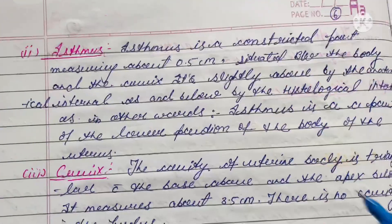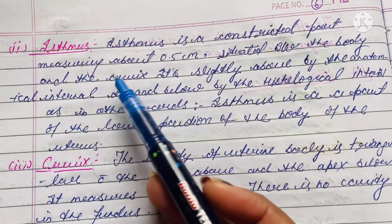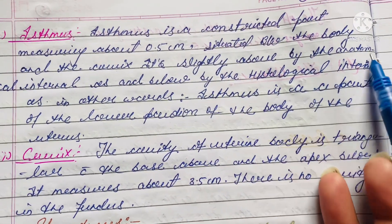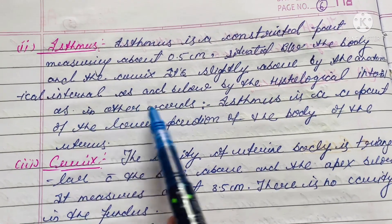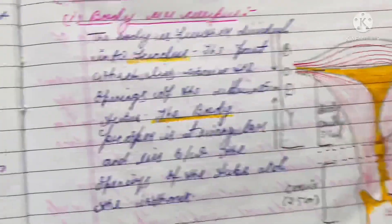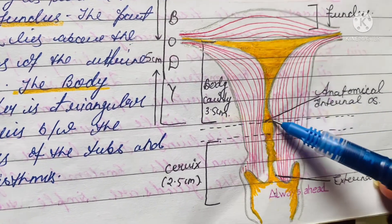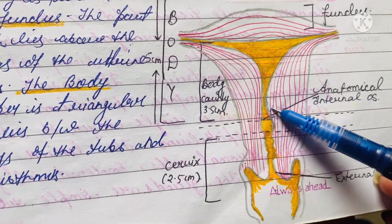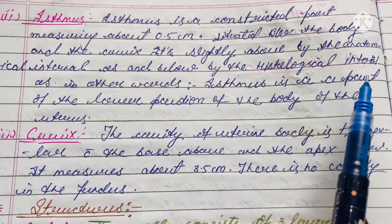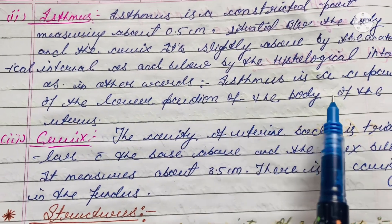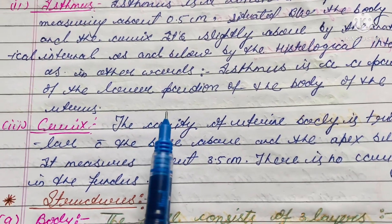The isthmus is the constricted part measuring about 0.5 centimeters, situated between the body and the cervix. It is bounded above by the anatomical internal os and below by the histological internal os. In other words, the isthmus is part of the lower portion of the body of the uterus.